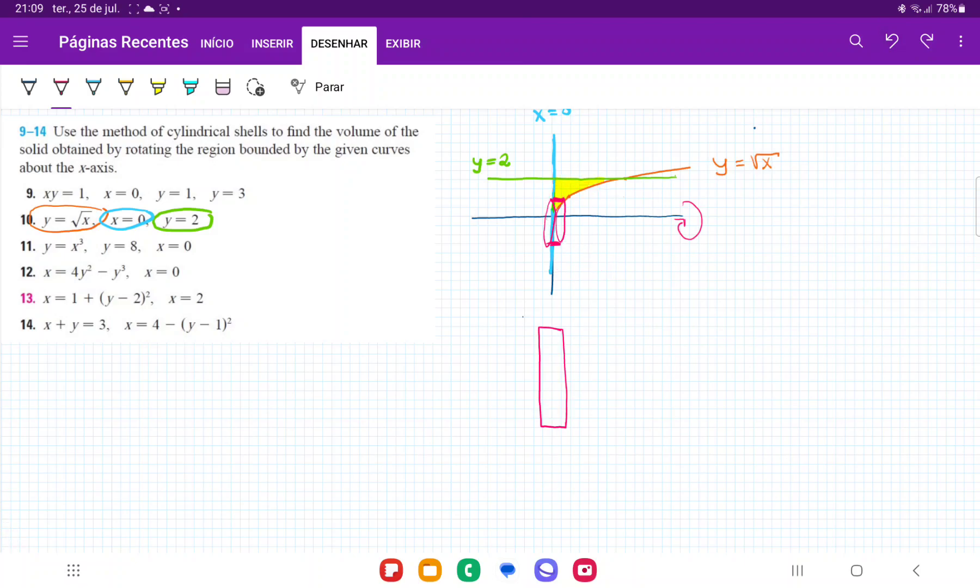So basically our volume here is going to be the integral. We're summing up these cylinders, summing up their area from 0 all the way out to y equals 2. So we're doing from 0 to 2, and then we're summing up these areas. But our areas are a function of y because we're summing it up vertically. So we have A(y) dy.